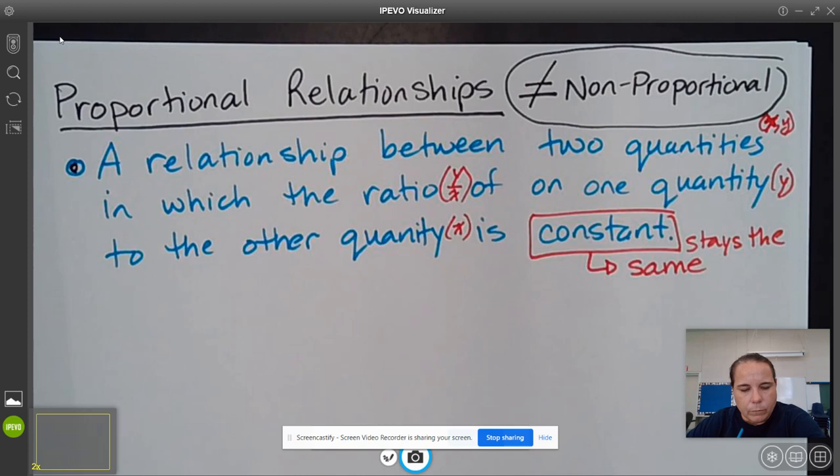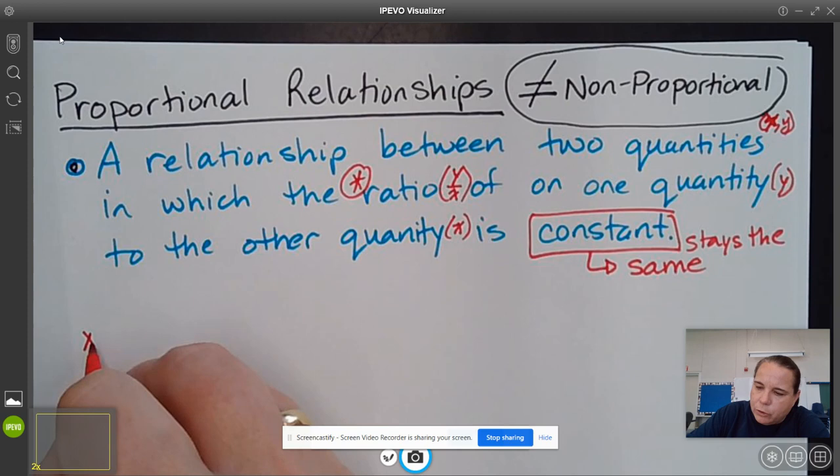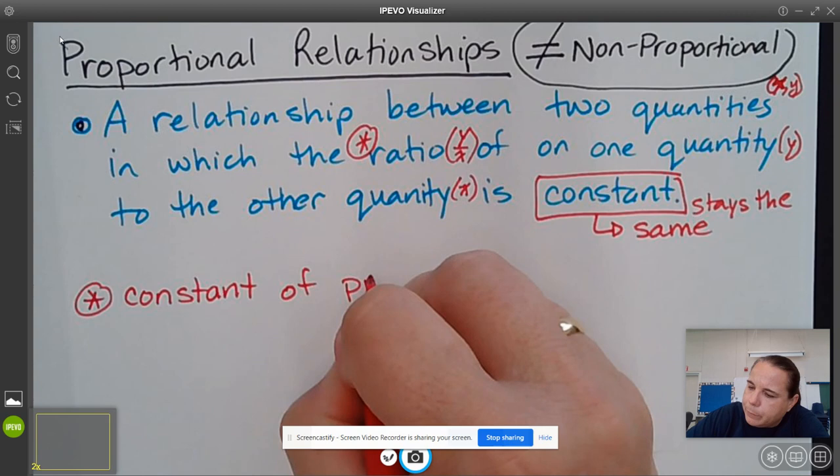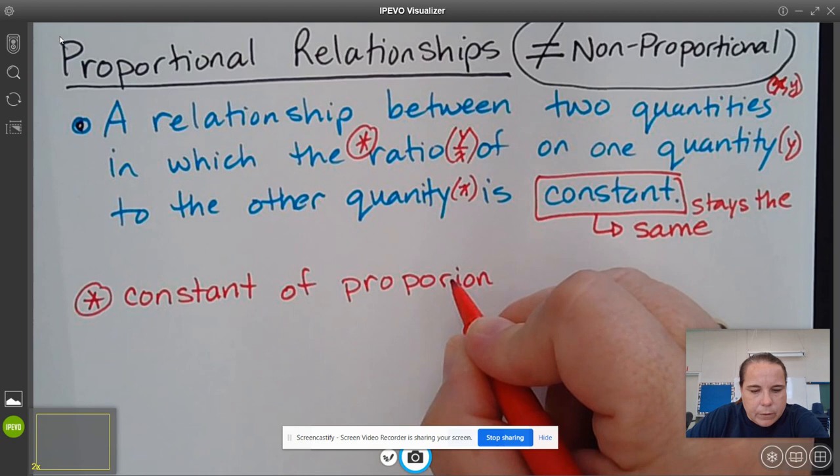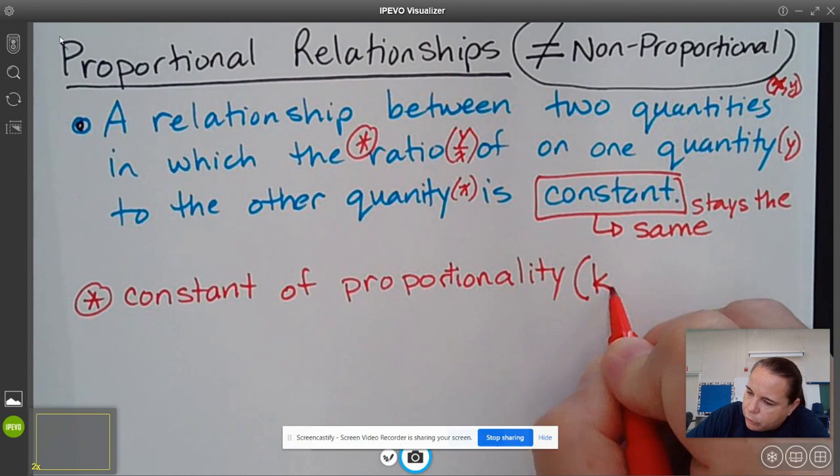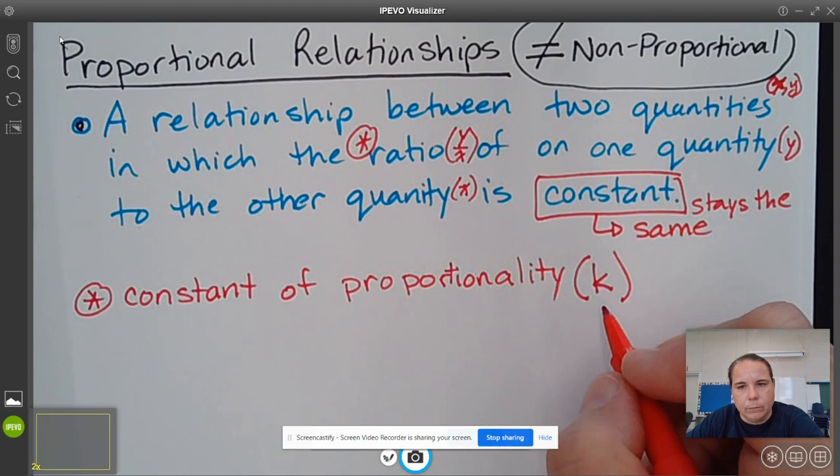Now, what this ratio is right here has a special name. That ratio has a special name and it is called the constant of proportionality. Miss Mills is not the best of spellers, so I often just leave a letter out. So constant of proportionality. The constant of proportionality has a special variable assigned to it. It is called K.